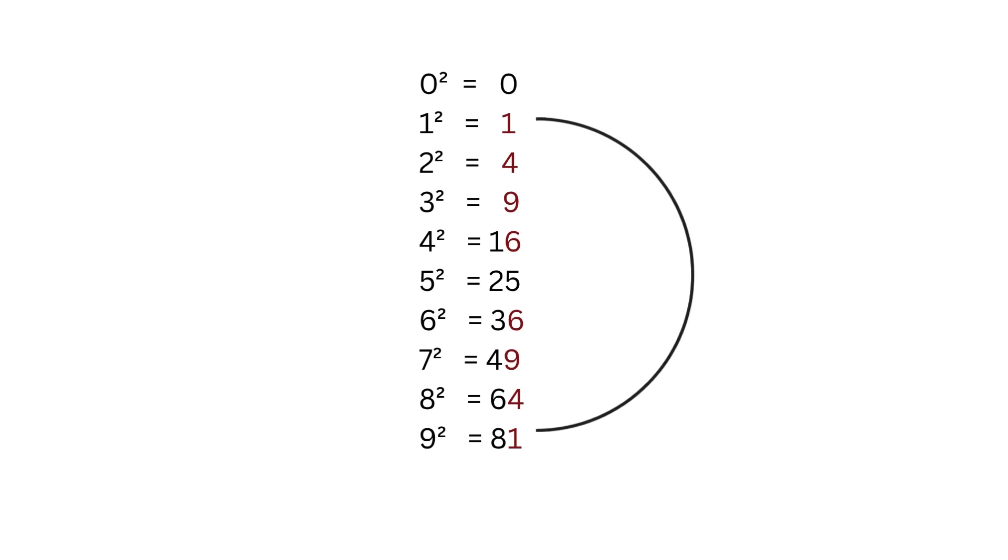1 squared and 9 squared both end in 1. 2 squared and 8 squared both end in 4. 3 squared and 7 squared both end in 9. And 4 squared and 6 squared both end in 6. The square of 0 ends in 0 and the square of 5 ends in 5.